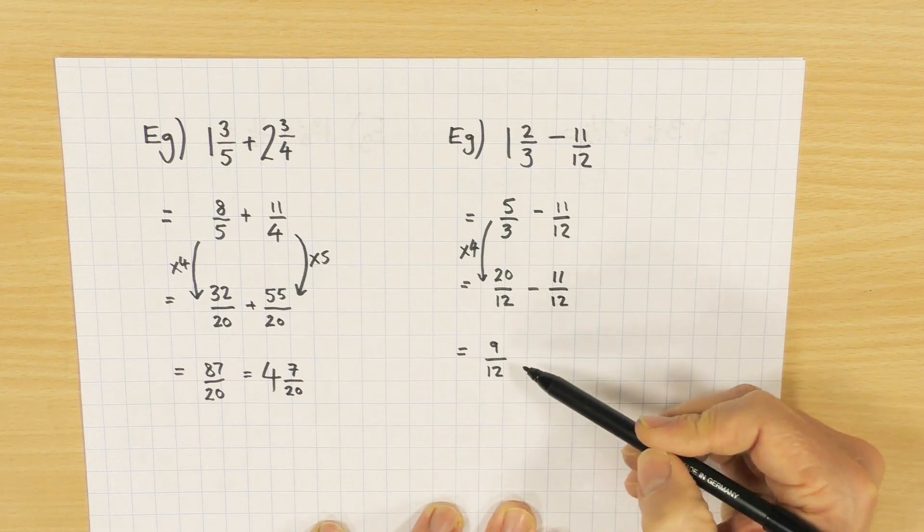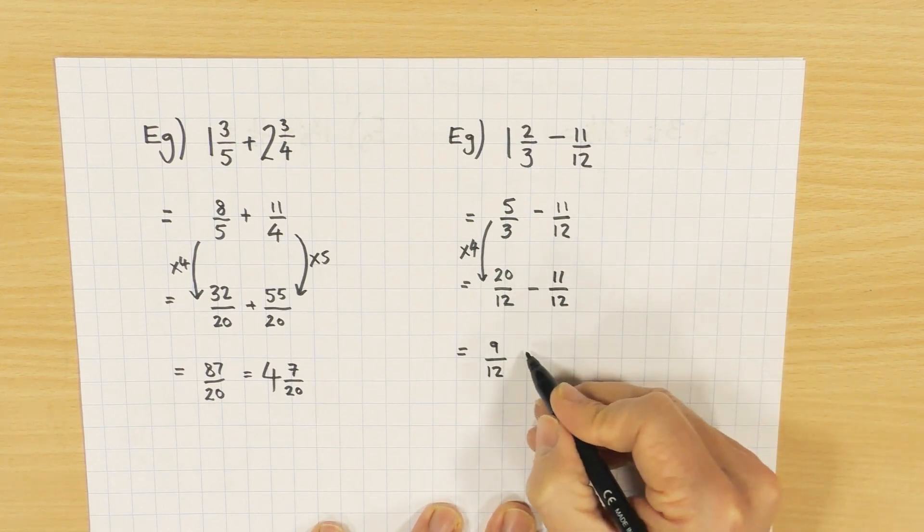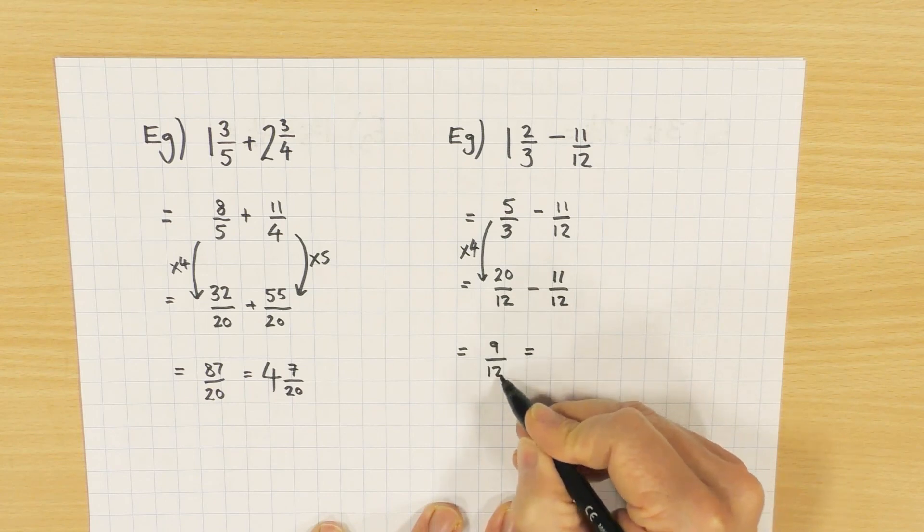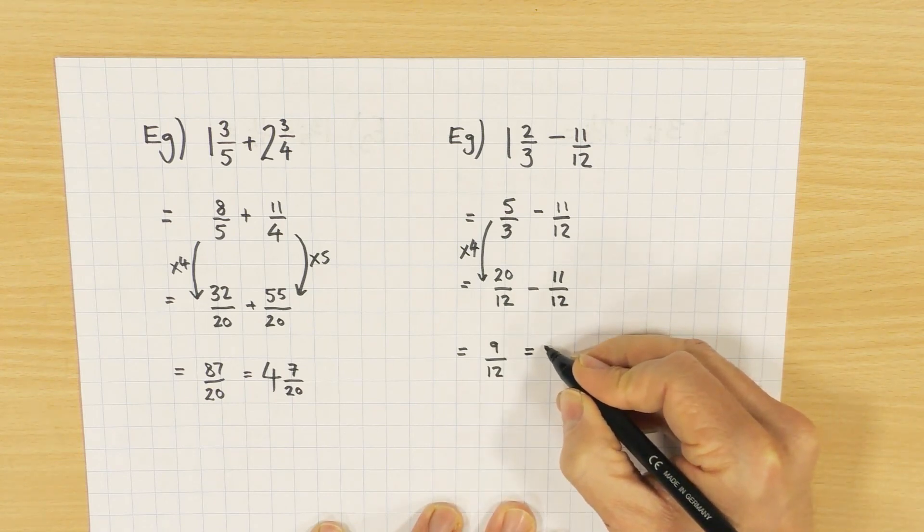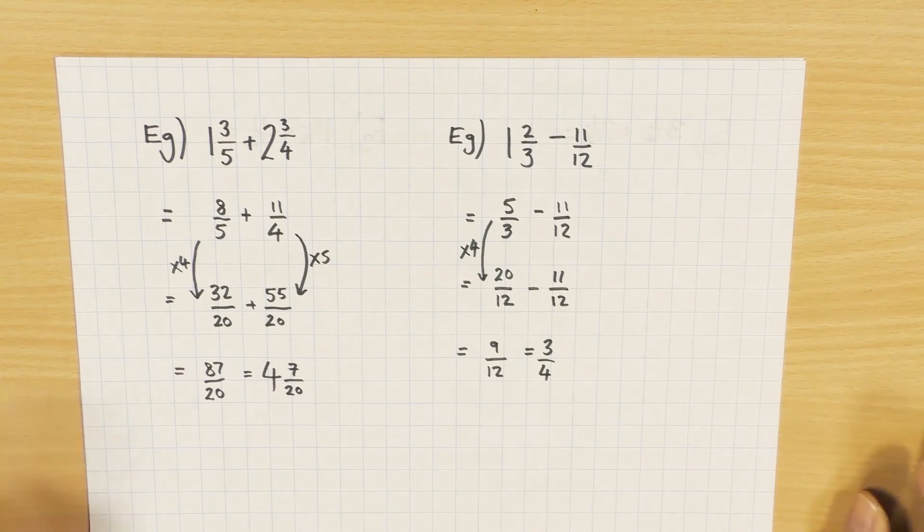I can't write it as a mixed number, it's an ordinary fraction, but what could I do? I could simplify it. Obviously both these numbers occur in the three times table. 9 divided by 3 is 3. 12 divided by 3 is 4. We're finished.